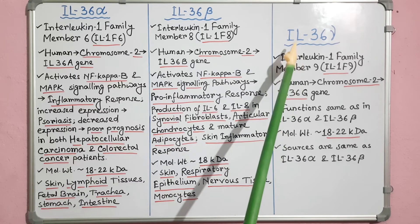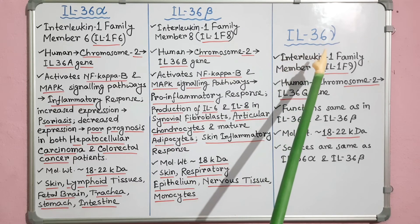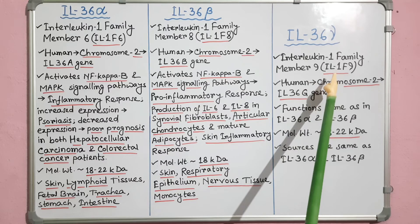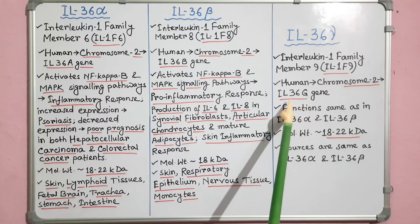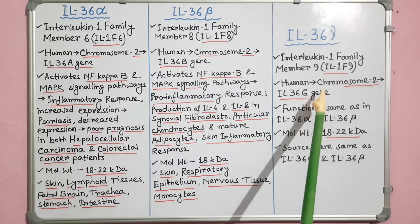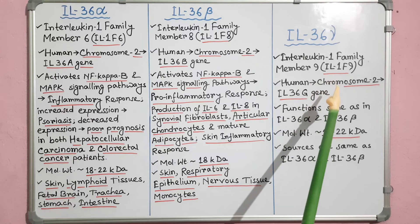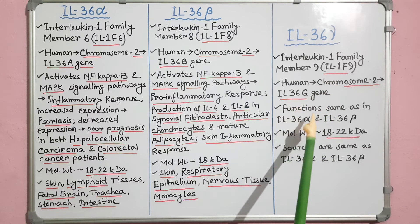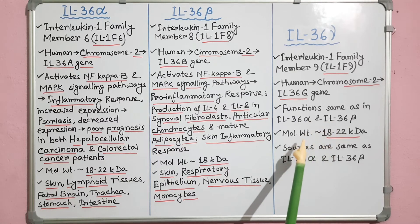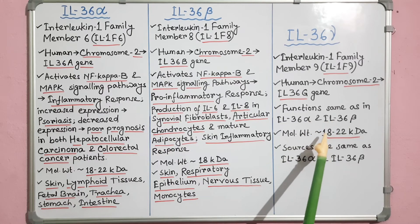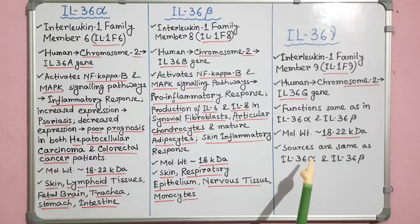Interleukin-36 gamma is also known as interleukin-1 family member 9 or IL-1F9. It is encoded by the IL-36G gene of chromosome 2 in humans. Its functions are the same as IL-36 alpha and IL-36 beta. Molecular weight is 18 to 22 kilodalton, and its sources are also the same as IL-36 alpha and IL-36 beta.